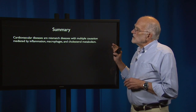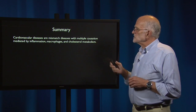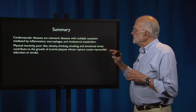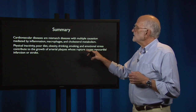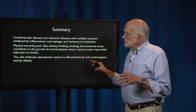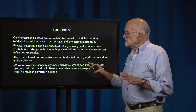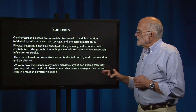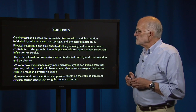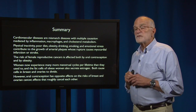To summarize: cardiovascular diseases are mismatched diseases with multiple causation, mediated by inflammation, macrophages, and cholesterol. Risk factors include physical inactivity, poor diet, obesity, drinking, smoking, and emotional stress, all of which contribute to the growth of arterial plaque whose rupture can cause myocardial infarct or stroke. The risk of female reproductive cancer is affected by both oral contraception and obesity. Women now experience many more menstrual cycles per lifetime than they used to, and fat cells in obese women also secrete estrogen — both causing cells in breasts and ovaries to divide. However, oral contraception has opposite effects on breast and ovarian cancer risk, effects that roughly cancel each other out.